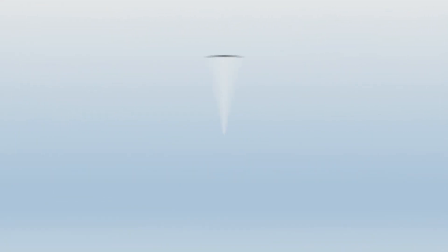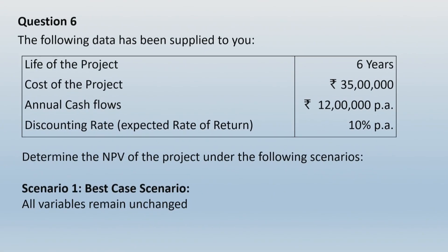Let us take up question number 6. The following data has been supplied: life of the project is 6 years, cost of the project is Rs 35 lakhs, annual cash flow is Rs 12,00,000 per annum, and discounting rate is 10% per annum. Determine the NPV of the project under the following scenarios. Scenario 1 is the best case scenario where all variables remain unchanged — meaning the base data applies as-is and the resulting NPV will represent the best case.